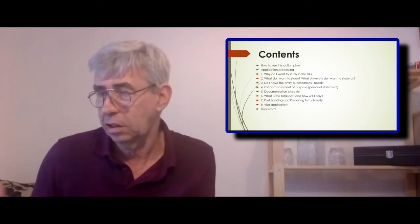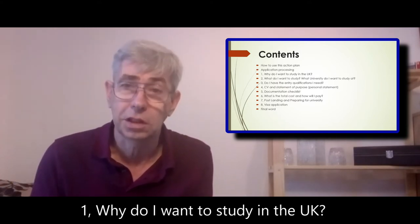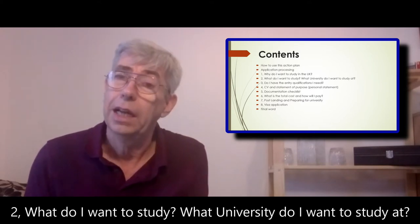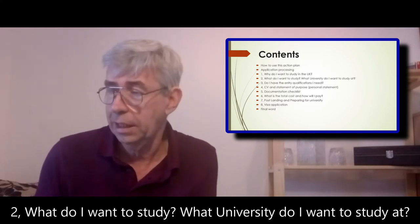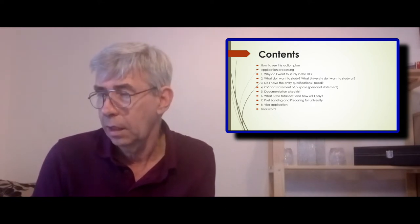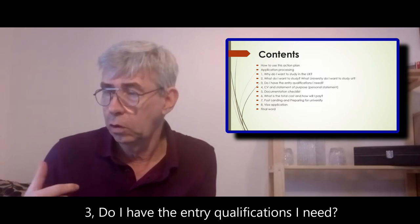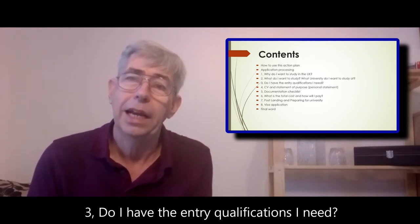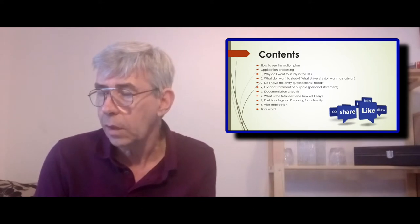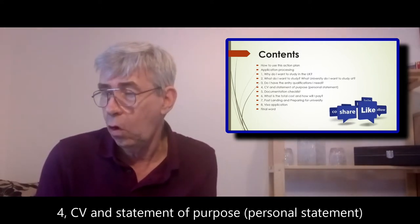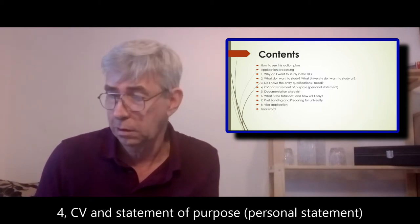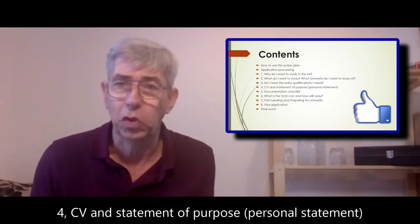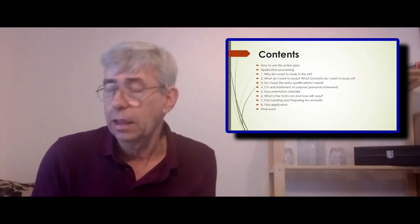So then we get to the numbered section. The first section is why do you want to study in the UK. The second section is what is it you actually want to study — what course and what university would you like to study at. Then we move on to number three, which is the qualifications. Do you have the qualifications required to get on that course, and what to do if you haven't got any qualifications. Number four is your CV — you're going to need a CV, and if you haven't got one you're going to need to create one. And a statement of purpose, which is one of the big issues — creating a statement of purpose.